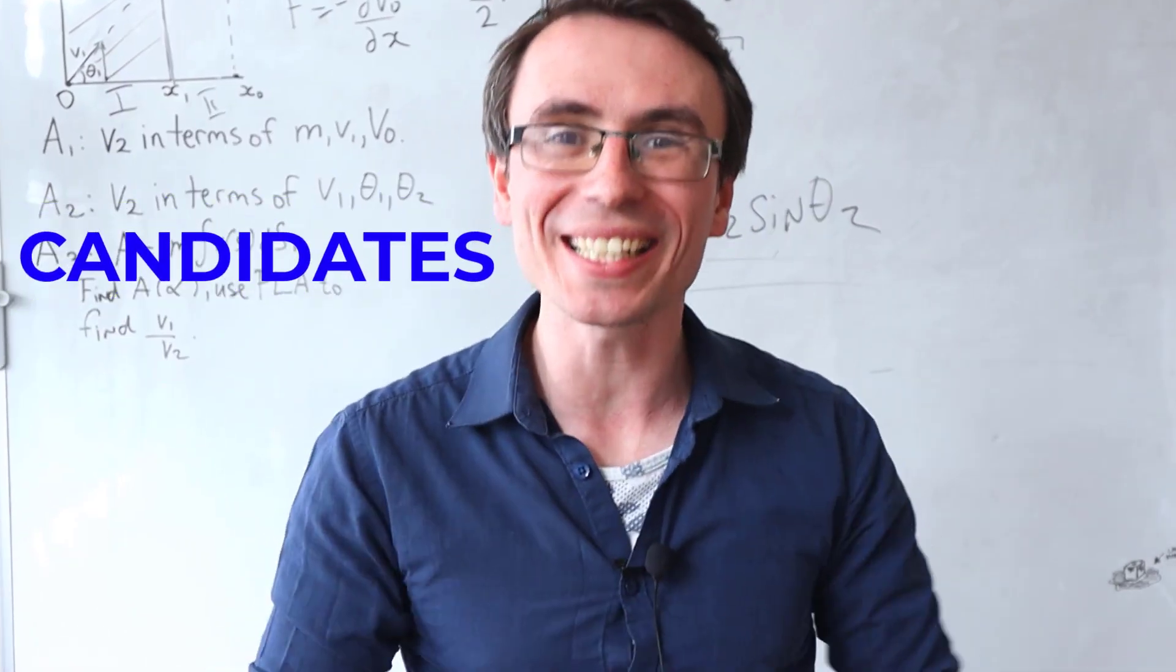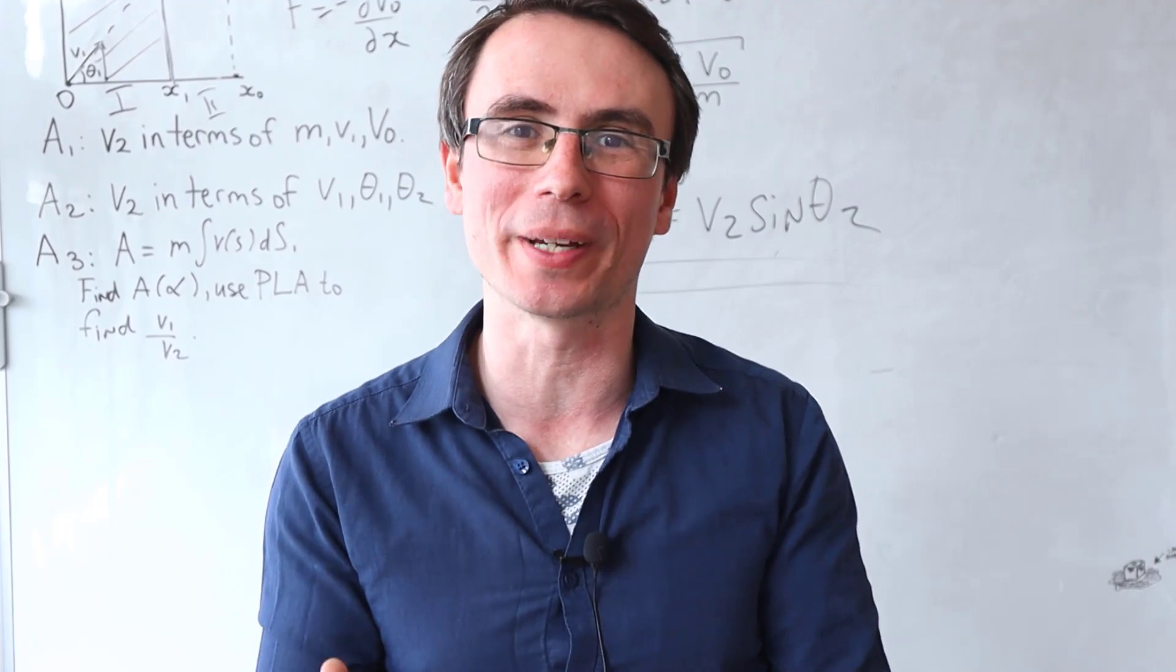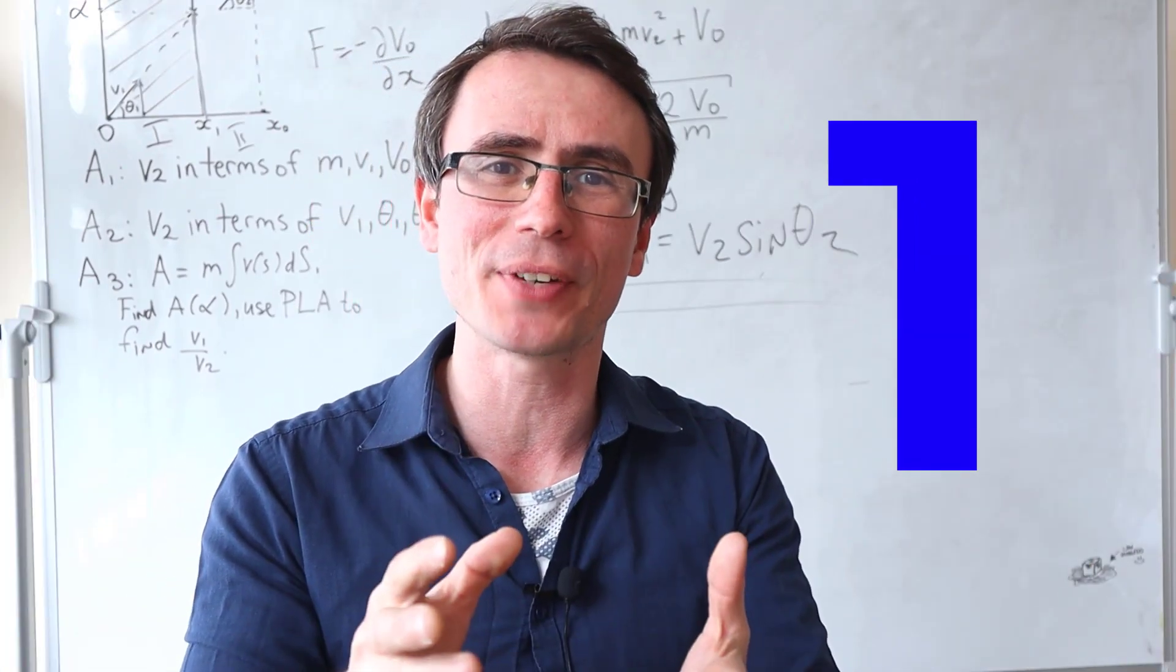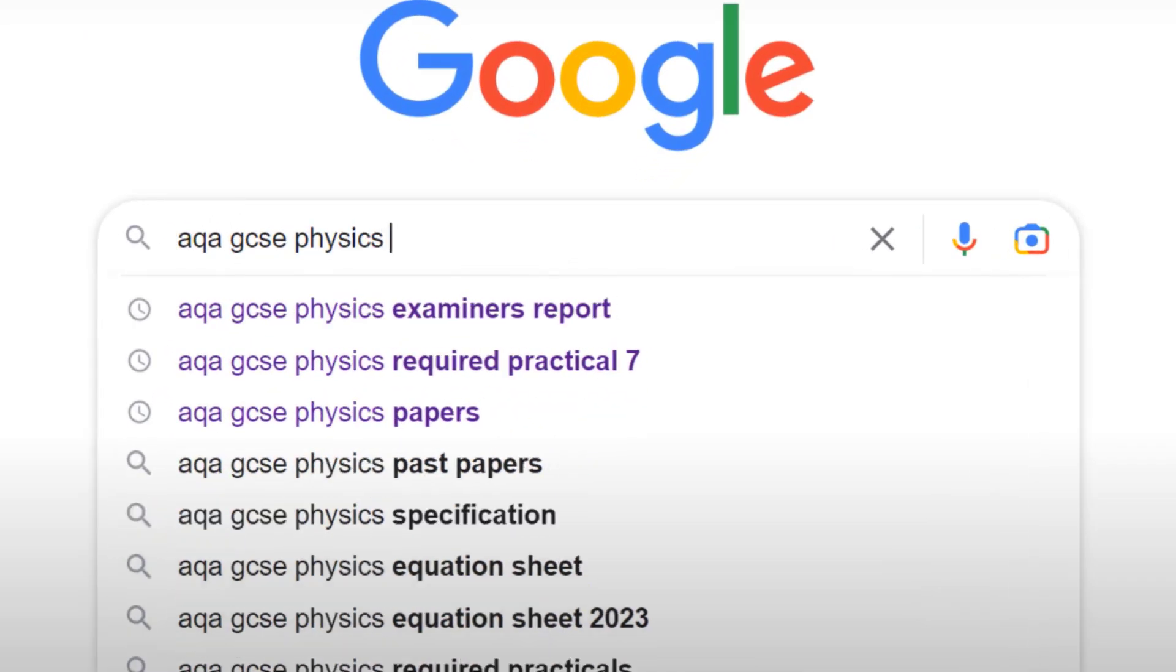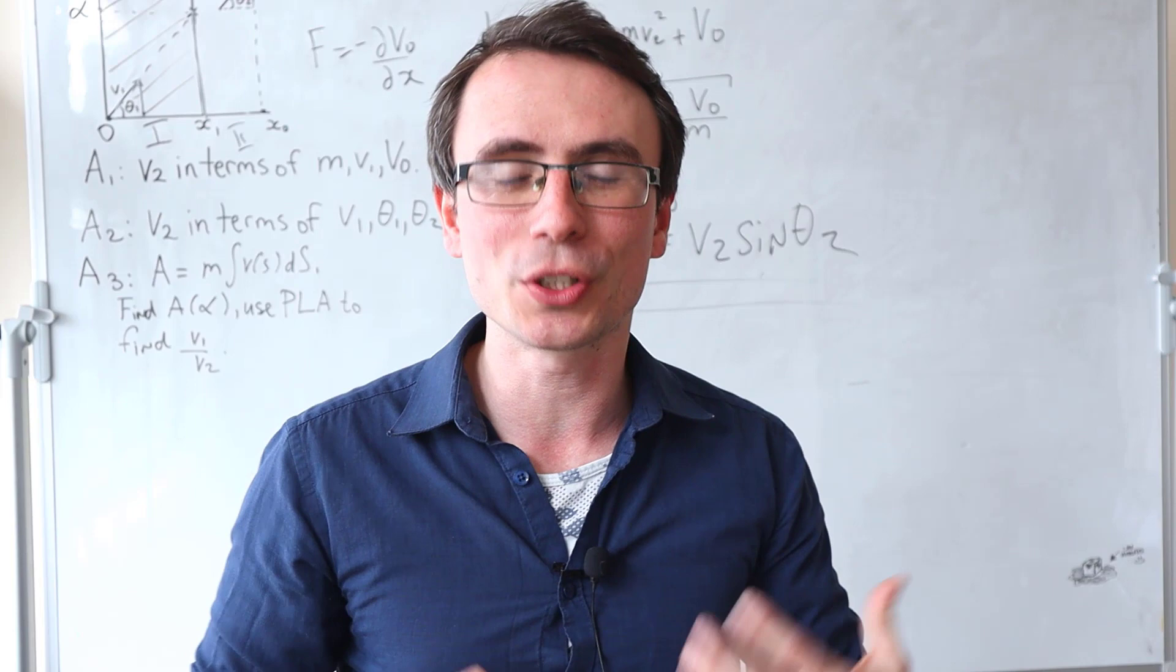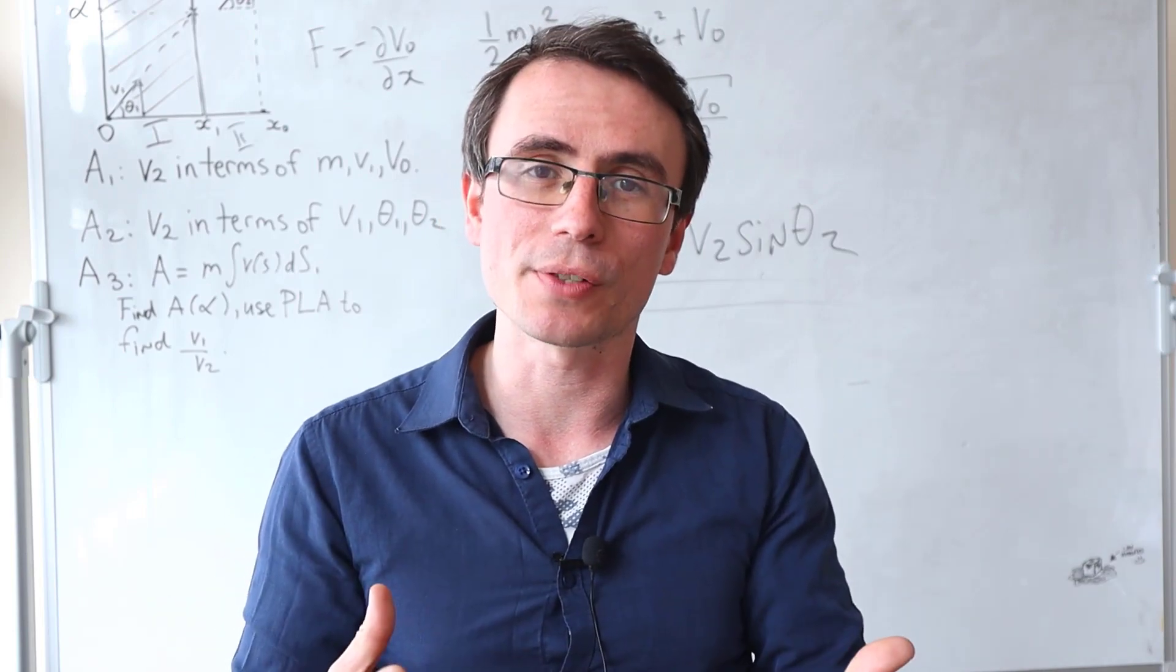According to the exam board, candidates that were successful in GCSE physics could do the following. Number one, they were well acquainted with the content of the specification. You can find your specification by googling your exam board's name followed by GCSE specification, or your teacher will be able to provide this for you.